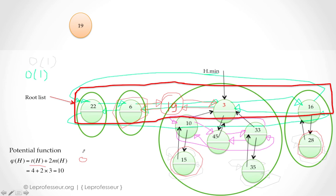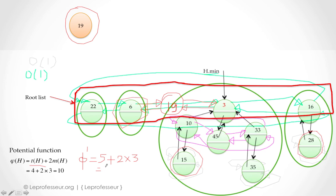Now how much is the new potential of this heap? We count how many trees are in the root list: one, two, three, four, five — node 19 is a tree with just one node. So five trees, plus two times the number of marked nodes. We didn't touch any marked nodes — 6, 15, and 28 were marked, so three marked nodes. The new potential is 5 + 2×3 = 11, which is one above the previous potential of 10 — a potential increase of just one.